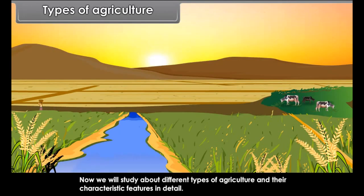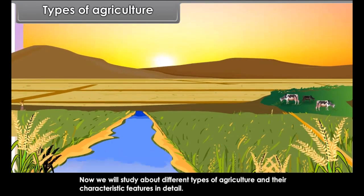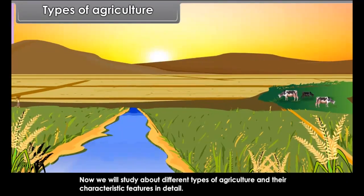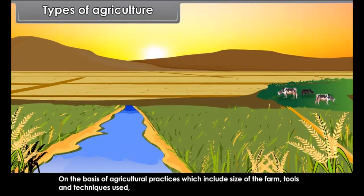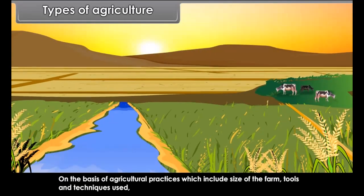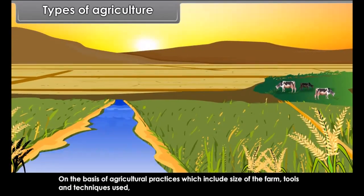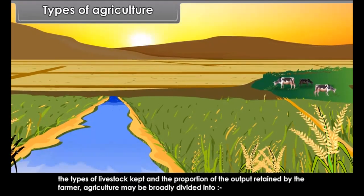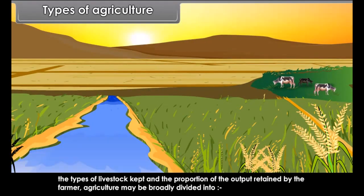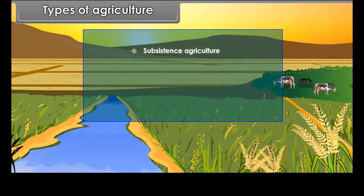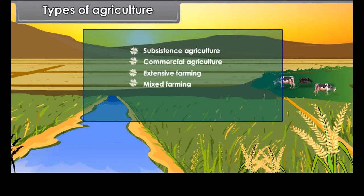Now we will study about different types of agriculture and their characteristic features in detail. On the basis of agricultural practices — which include size of the farm, tools and techniques used, types of livestock kept, and the proportion of output retained by the farmer — agriculture may be broadly divided into subsistence agriculture, commercial agriculture, extensive farming, mixed farming, and plantation agriculture.